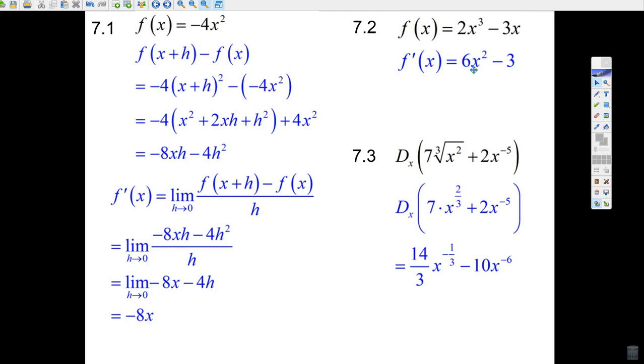The next question is super easy, because all you do is do the derivative rule that we've learned. 3 times 2 is 6, and bring it down 1 to x squared. 1 times minus 3 is minus 3, and it drops to x to the 0. So, just 1 there, minus 3 is the answer.